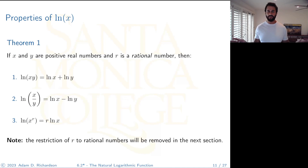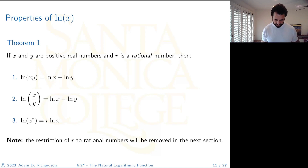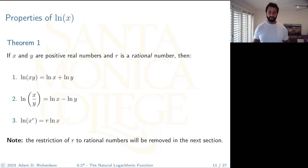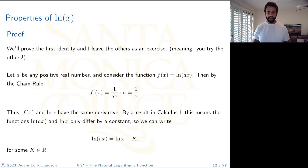Now we get all these nice properties. Remember, for now we don't know anything else about natural logs. We're going to prove them. If x and y are positive real numbers and r is a rational number, then we get three properties: the product-to-sum rule, the quotient-to-difference rule, and the rule that lets you pull out exponents. We'll prove property 1 together and leave the other two as exercises. Also, the restriction that r is rational will be removed in the next section.